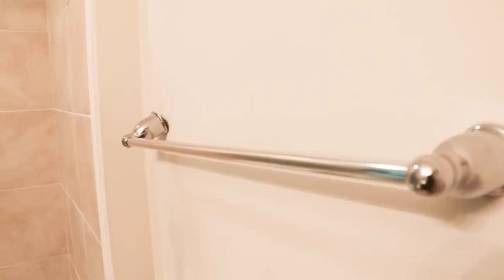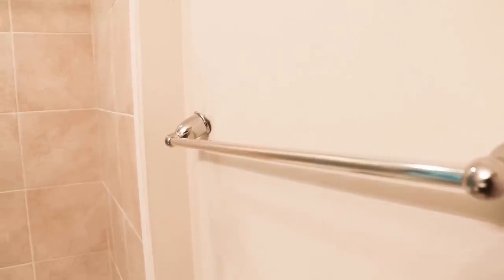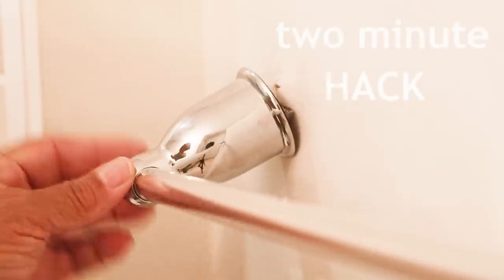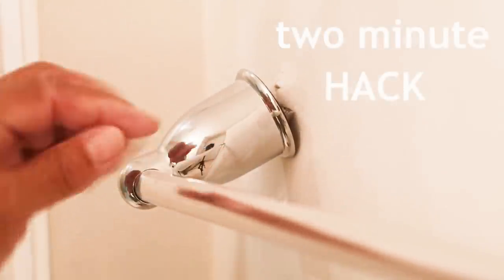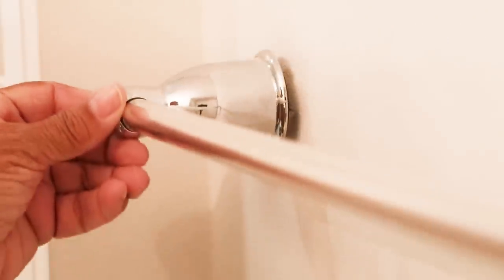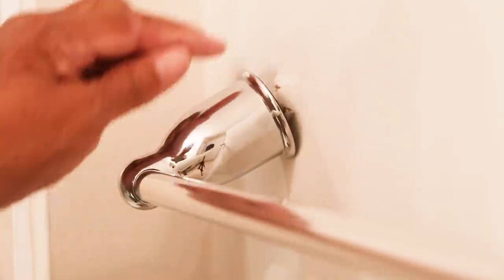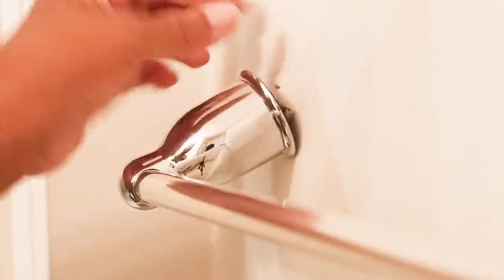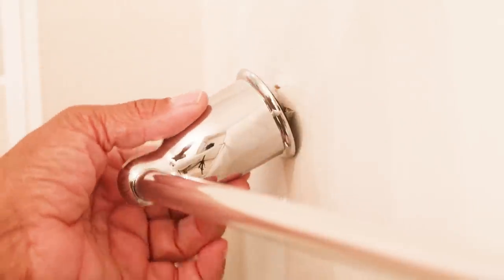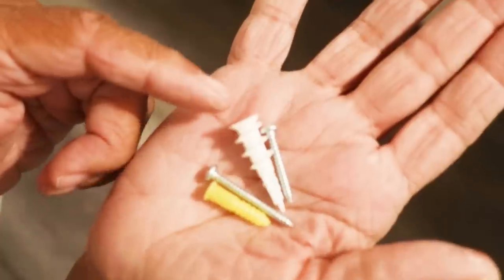This right here, it's a towel rack that's hanging on for dear life. I've got to tell you, this is a common problem in a lot of homes. It's where that plaster anchor that holds the screw that holds the towel rack in place starts to ream the drywall and gives way.